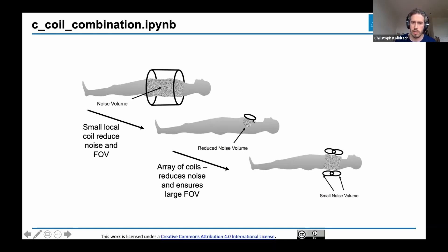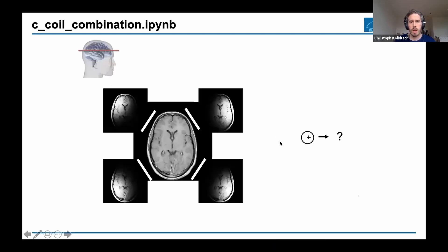This is where the receiver array idea started. If I have a smaller coil, a smaller volume contributes to the noise level. But this doesn't create a really good image, so I need multiple coils to cover everything I want to image. This proved an era of MRI, but quickly people realized this could be very interesting for image reconstruction.